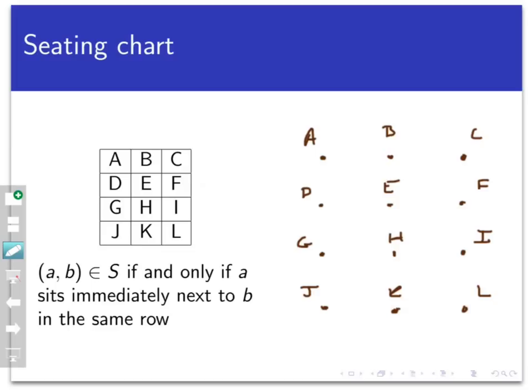So for example, (B, C) belongs to the set S, and so does (J, K), because B sits next to C immediately and in the same row, and so does J with relationship to K. But not (A, C), because A does not sit immediately next to C. Now what would the directed graph for this relation look like?